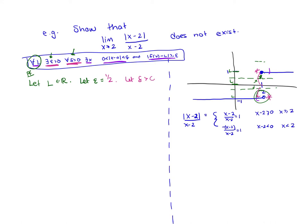Now let's pick an arbitrary delta — let delta be some real number greater than 0. I need to show what x is going to be to get the contradiction. Since which x breaks things depends on L, instead of naming it directly, let's assume that for x close to 2 from above and below I am within 1/2 of L and see if we can get a contradiction. So in scratch work: assume the limit is L and derive a contradiction.